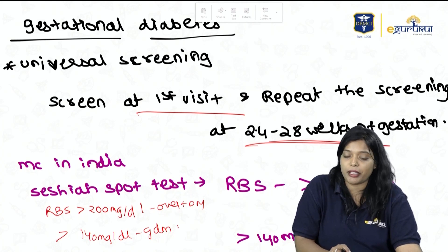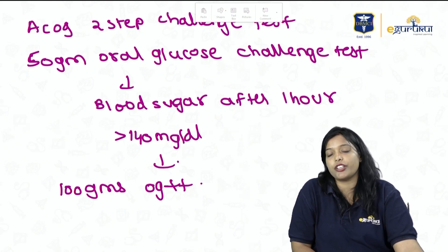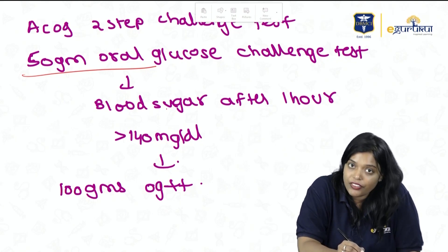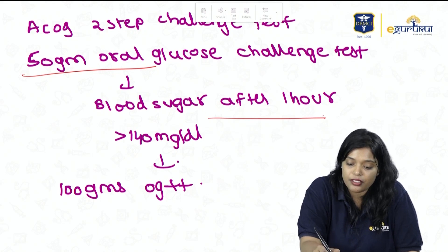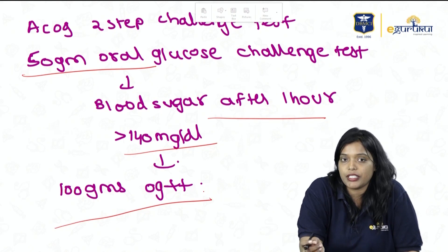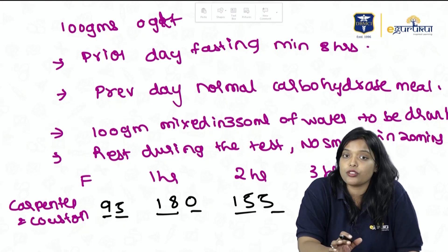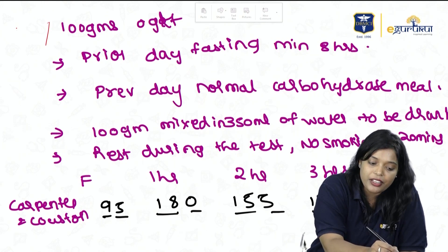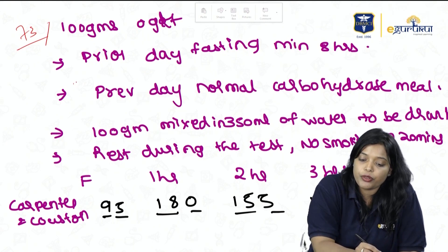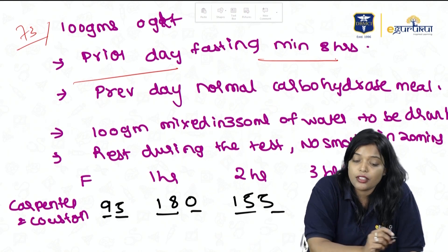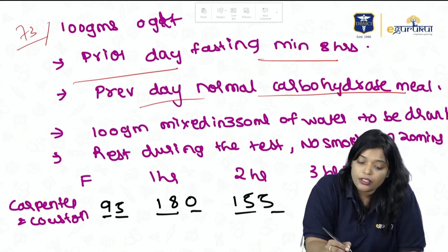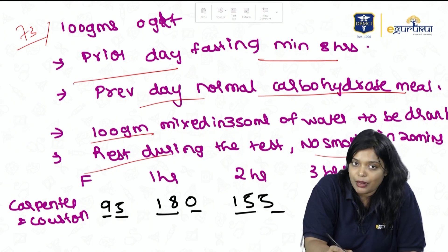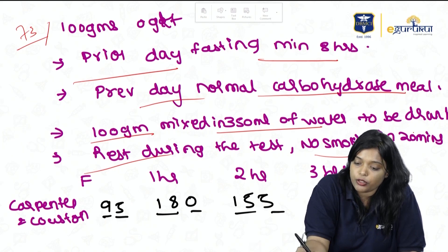The ACOG two-step challenge test involves giving 50 grams of glucose and measuring blood sugar after 1 hour; if more than 140, proceed to 100-gram OGTT. Nowadays we directly do OGTT — either 100g or 75g. Prerequisites for both: minimum 8 hours fasting, normal carbohydrate meal the previous day, rest during the test, no smoking, and glucose dissolved in 350 mL of water drunk within 20 minutes.